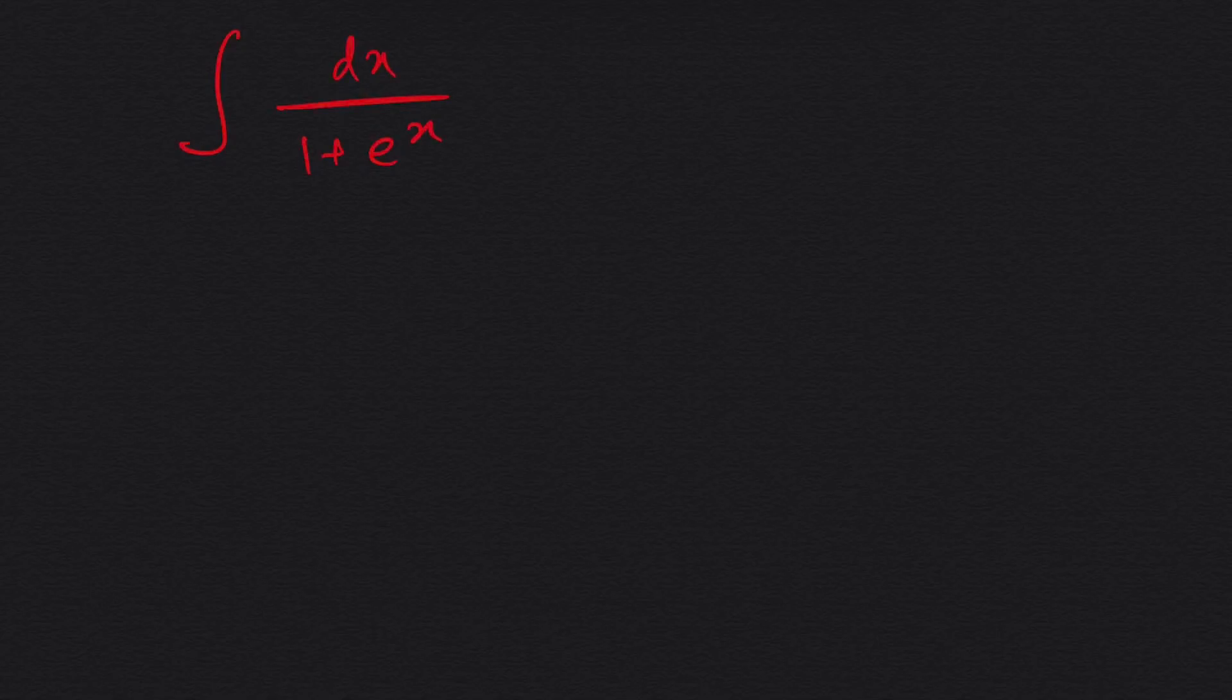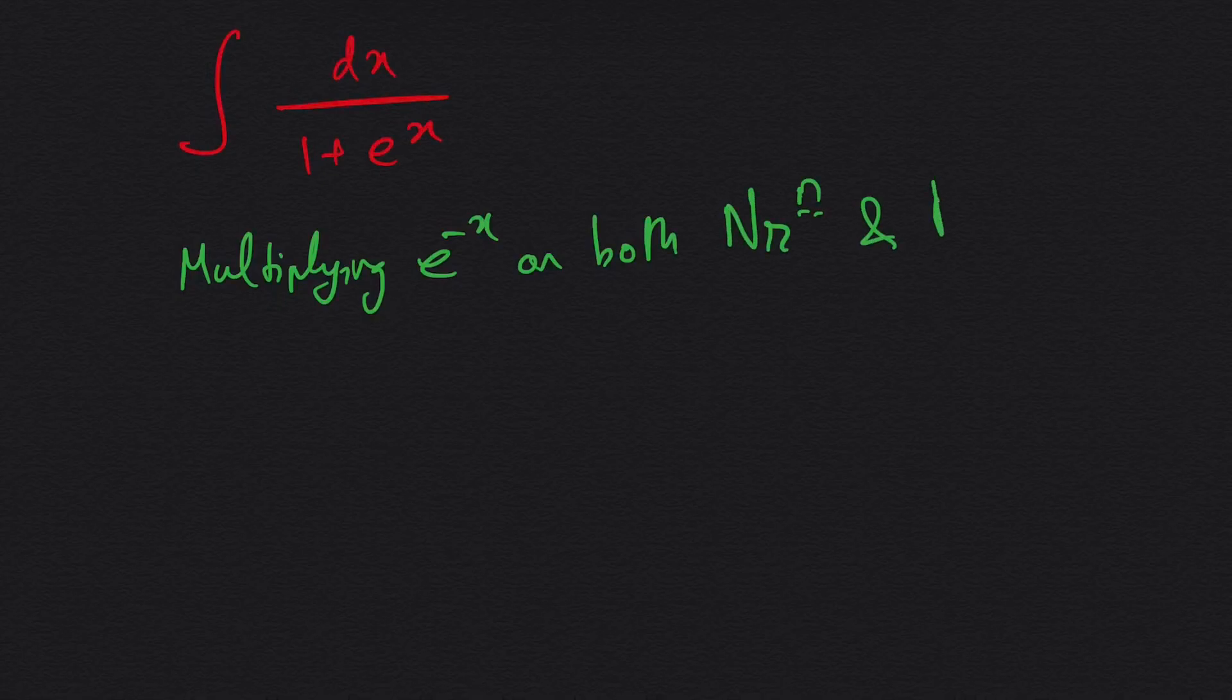So I'm writing it down, multiplying e to the power minus x on both numerator and denominator. If we do the following, then the integration becomes e to the power minus x dx over e to the power minus x plus 1.